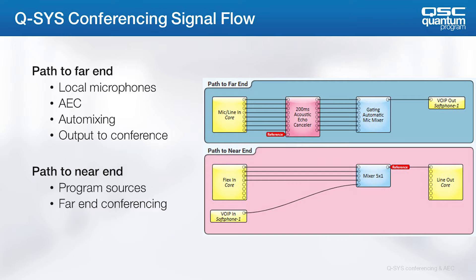Remember, the best practice is to have the last mic on setting enabled in the auto mixer so that some room noise is always fed to the far end. This helps keep the far end participants from feeling like they've been disconnected.